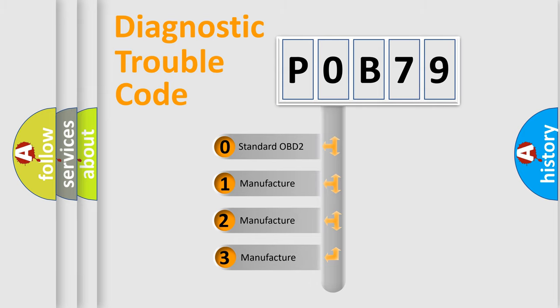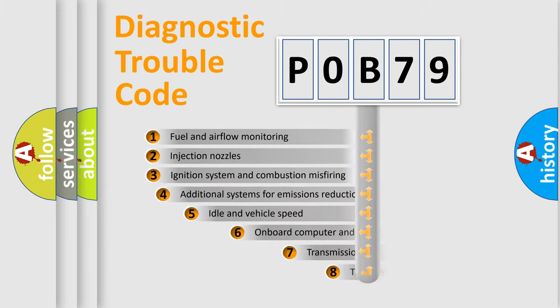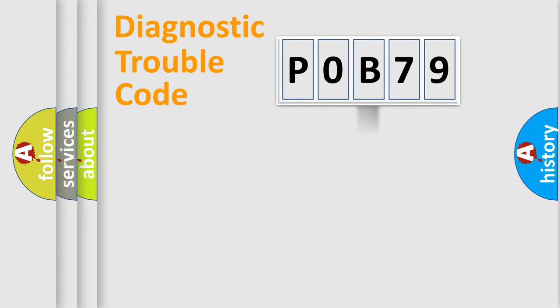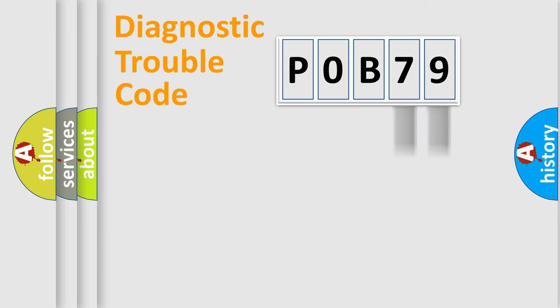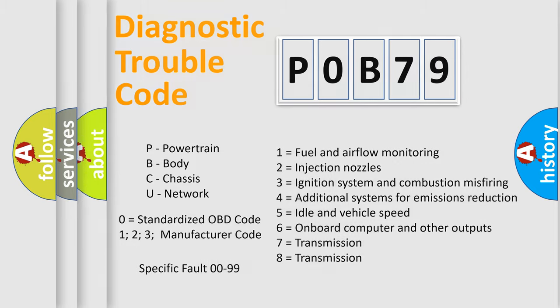If the second character is expressed as zero, it is a standardized error. In the case of numbers 1, 2, or 3, it is a manufacturer-specific expression of the error. The third character specifies a subset of errors. This distribution is valid only for the standardized DTC code. Only the last two characters define the specific fault of the group, and this division is valid only when the second character is zero.